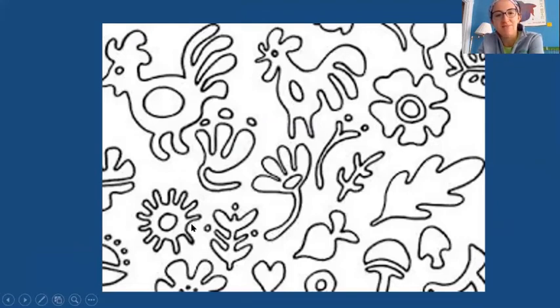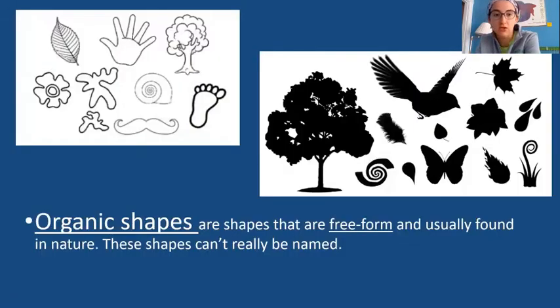What could that be called? This looks like a blob. You know, geometric shapes always have a name. You can say that's a triangle, that's a square. These are what's called organic shapes. They're loose and they're silly and they're wild. Organic shapes are shapes that are free form and usually found in nature. These shapes cannot really be named always.